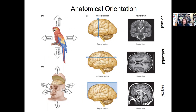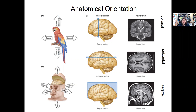Rostral translates to 'beak' in Latin and caudal translates to 'tail.' In humans and most animals, that ends up translating to essentially forward and back. Dorsal also means back, but that's also superior. If you think about the dorsal fin on something like a dolphin, it's going to be up above the body. Here's where you see dorsal, and ventral refers to the stomach — it's also referred to as inferior.